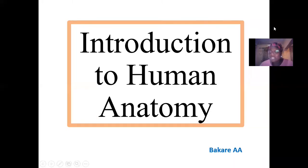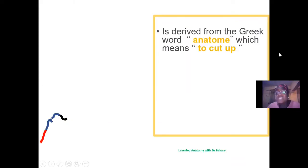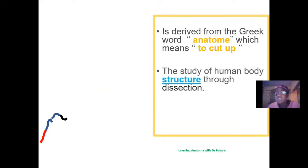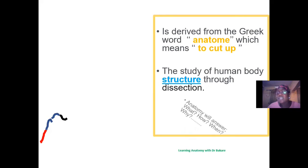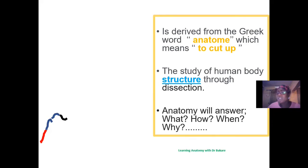Let's look at the introduction to human anatomy. Anatomy is derived from a Greek word, 'anatom,' which means to cut up. When the human body structure is studied through the process of dissection, which literally means to cut up or to open up, that is anatomy.